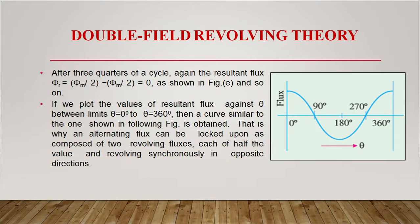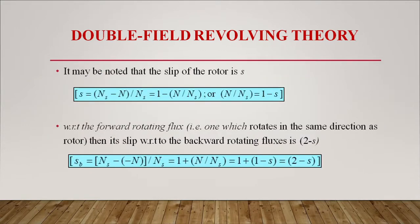If you plot the resultant flux against θ between 0° and 360°, you obtain a sinusoidal curve, confirming that the alternating flux can be looked upon as composed of two revolving fluxes each of half the value revolving synchronously in opposite directions. The slip of the rotor is s = (Ns - N)/Ns, so N/Ns = 1 - s. With respect to the forward rotating flux (same direction as rotor), its slip is s; with respect to the backward rotating flux, the slip is 2 - s.